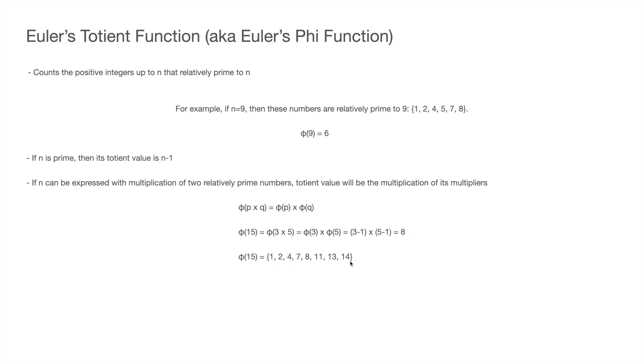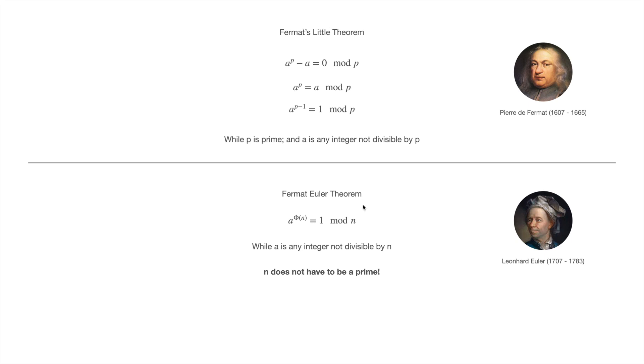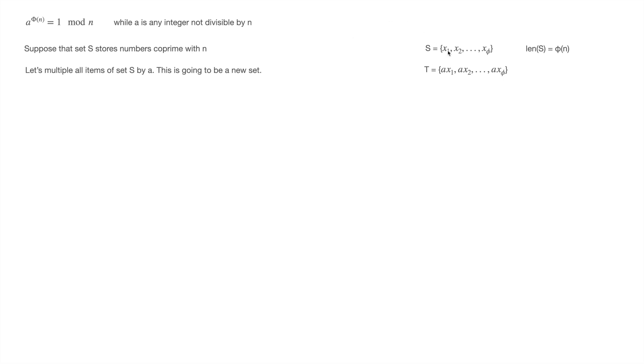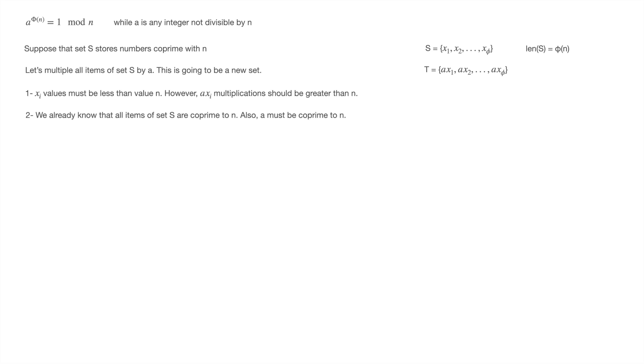Indeed, those are the positive integer values up to 15 that are relatively prime to 15. Now we have proven Fermat's Little Theorem — but how does Euler's theorem work? Let's prove it. Suppose set S stores numbers relatively prime to n, and there are three different numbers relatively prime to n, so the length of set S equals φ(n). Secondly, let's multiply all items of set S by a, calling this new set T, with elements a·x₁, a·x₂, and a·x₃.